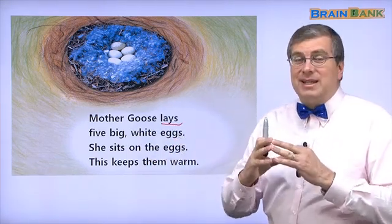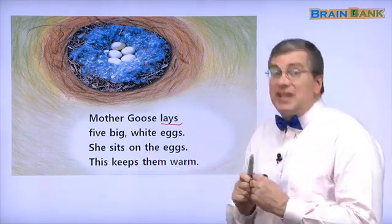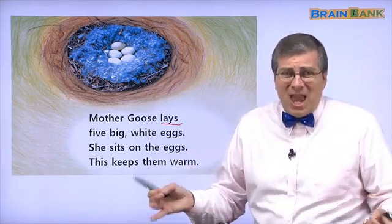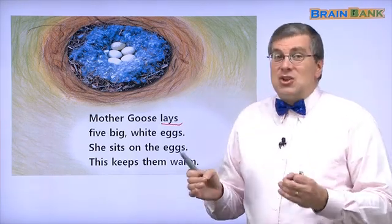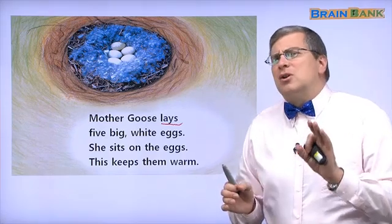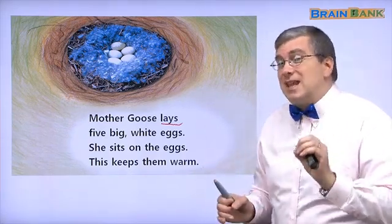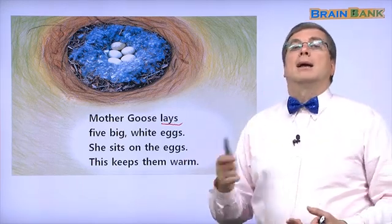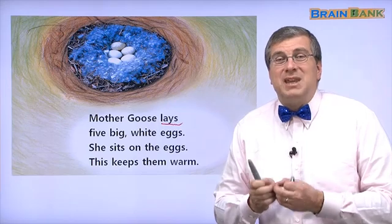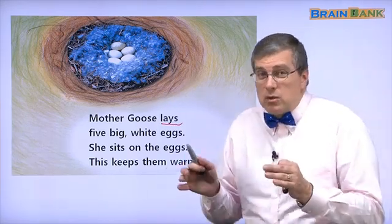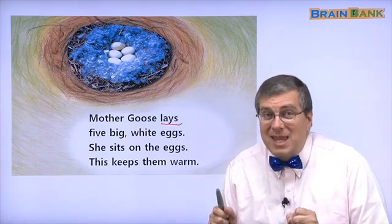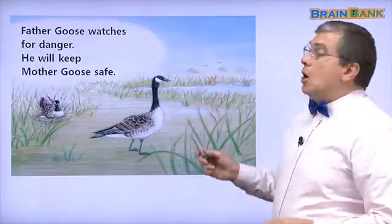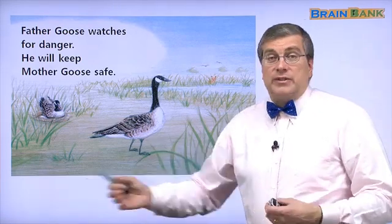Let's read: Mother Goose lays five big white eggs. White — white eggs. She sits on the eggs. Why does she sit on the eggs? The eggs are weak — you might break them — but Mother Goose is very careful. She sits on the eggs to keep them warm. The eggs must be warm, not cold.